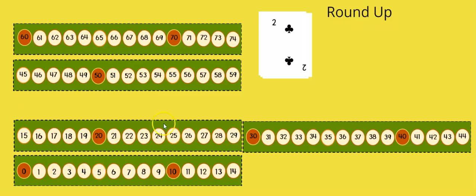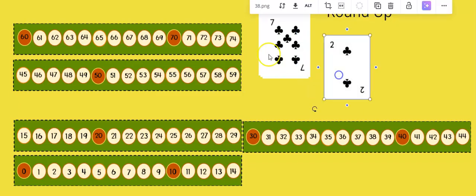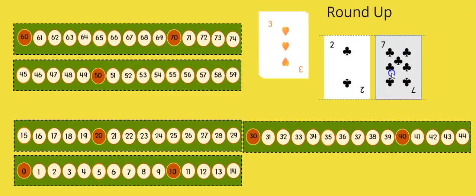So to play this game students will draw two cards and in this case they drew a 27. Now for our younger kindergartners they might just be looking for 27 and having them find 27 on the board and circle it.